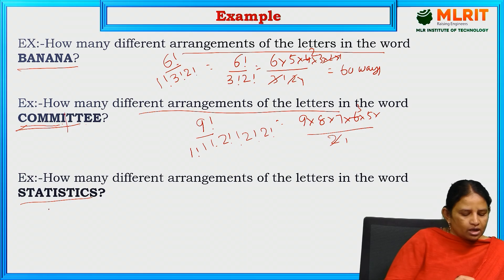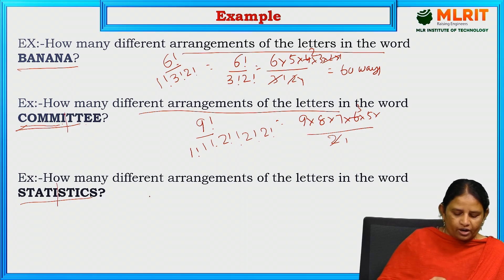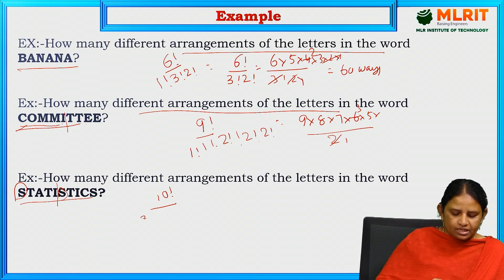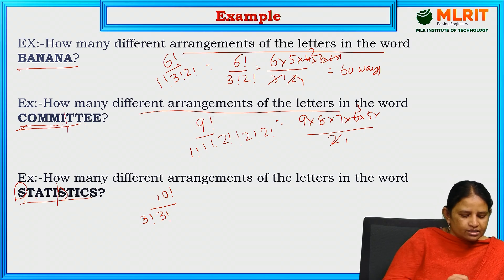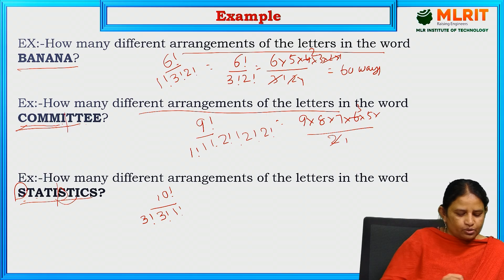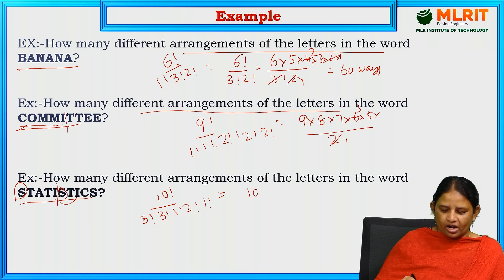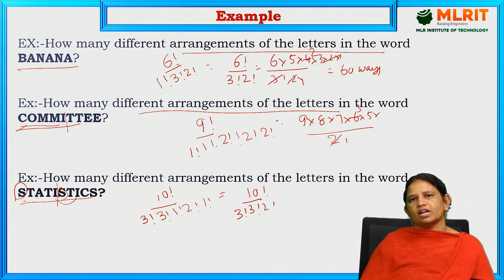Next, statistics. Total number of letters is 10. S is repeated 3 times — 3 factorial; T is repeated 3 times — 3 factorial; A is repeated 1 time — 1 factorial; I is repeated 2 times — 2 factorial; C is 1 factorial. So 10 factorial divided by 3 factorial times 3 factorial times 2 factorial gives the number of ways we can arrange the letters in the word statistics.